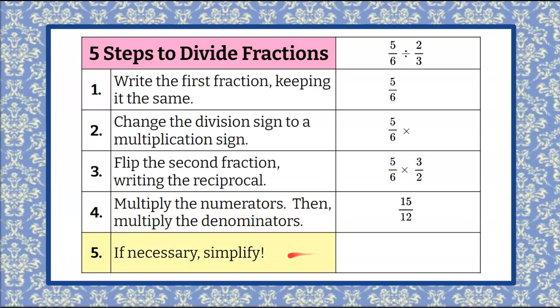Step five, if necessary, we're going to simplify. So if I look at the numerator and denominator, whatever I do to one, I must do to the other. They're both divisible by 3. 15 divided by 3 is 5. 12 divided by 3 is 4. So the quotient to this expression is 5 fourths.